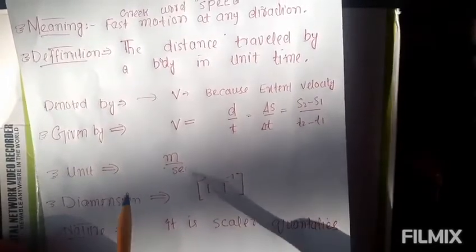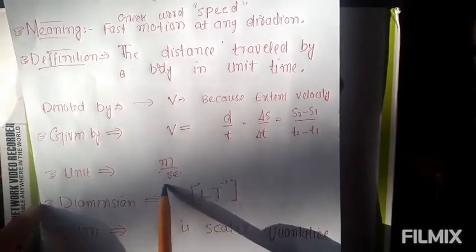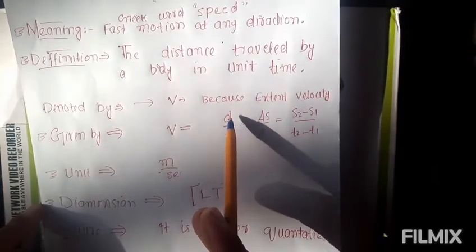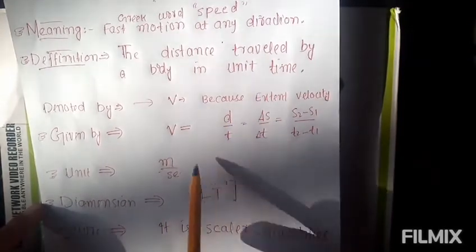Now come to the unit. Unit of speed is meter per second. Why? So the unit of distance is meter and time unit is second.